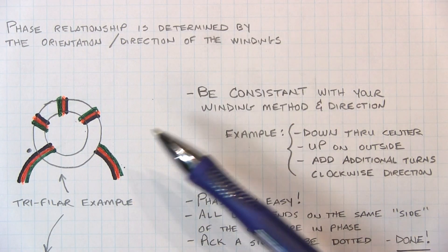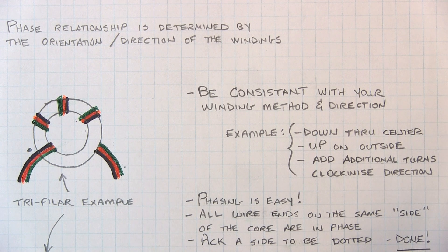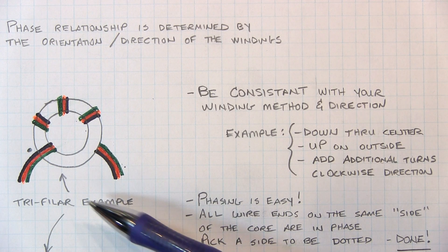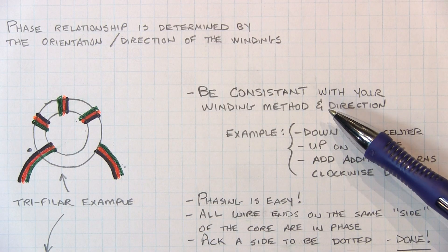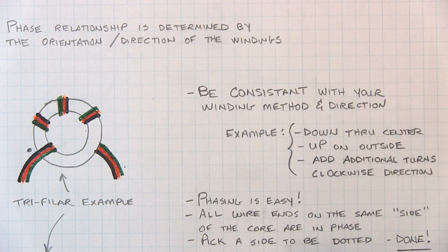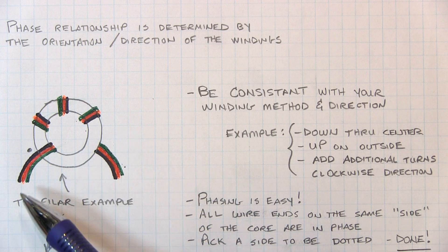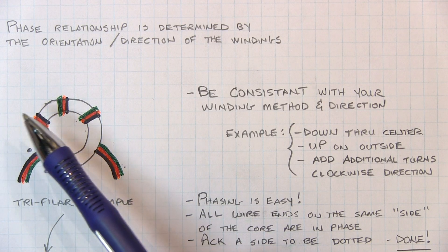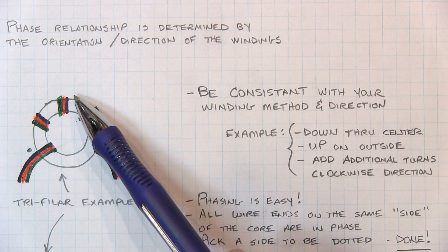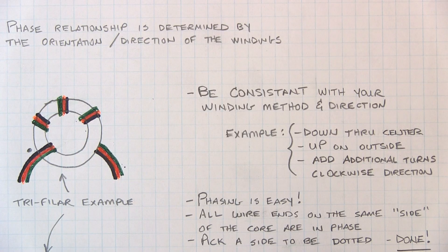So we'll use the example of a tri-filar wound toroidal transformer, just like I showed in the schematic earlier. And the real key is just being very consistent with the method of winding the turns. For example, I'm always going to take my turns and go down through the center, come back up on the outside, back down through the center, back up on the outside.